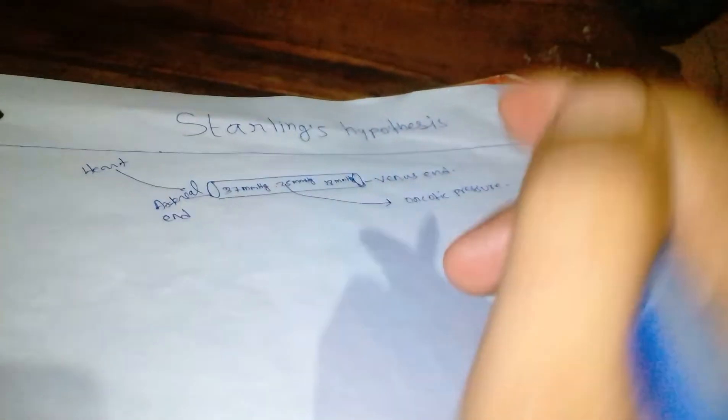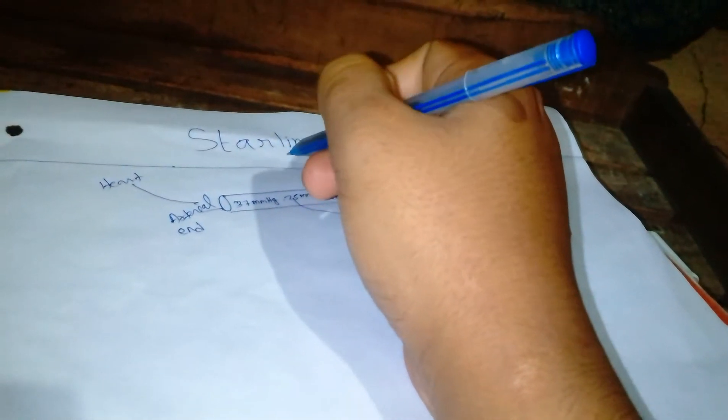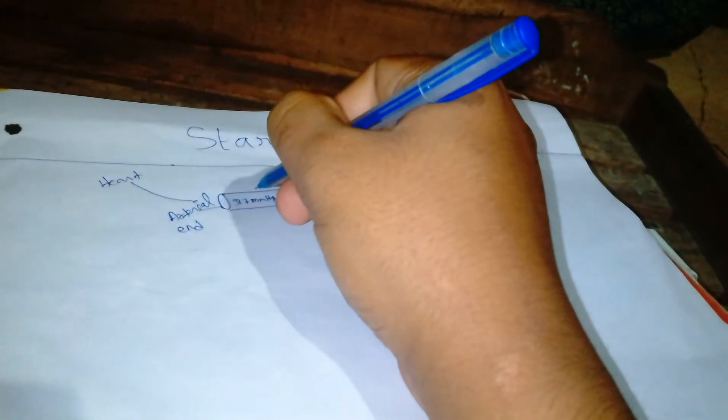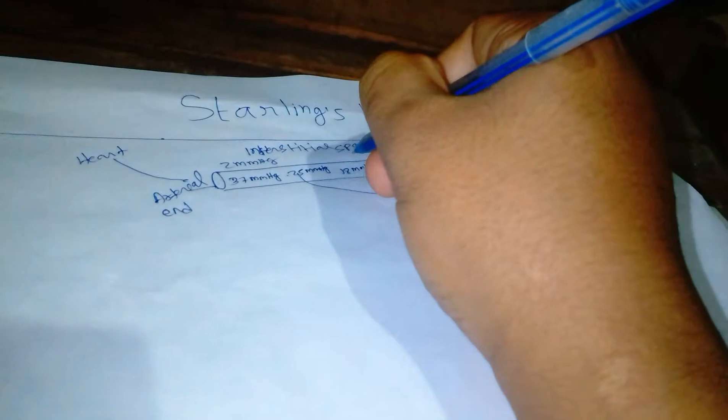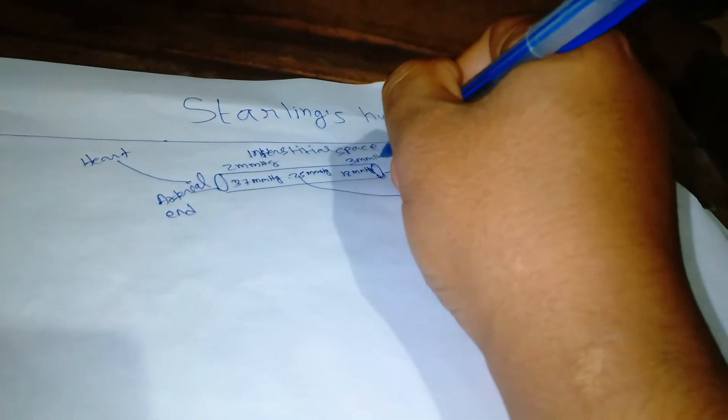So according to Starling's hypothesis, before we discuss Starling's hypothesis, let us see the hydrostatic pressure outside the capillary, means in the interstitial fluid, interstitial space. Here it is 2 mmHg and here it is 3 mmHg.